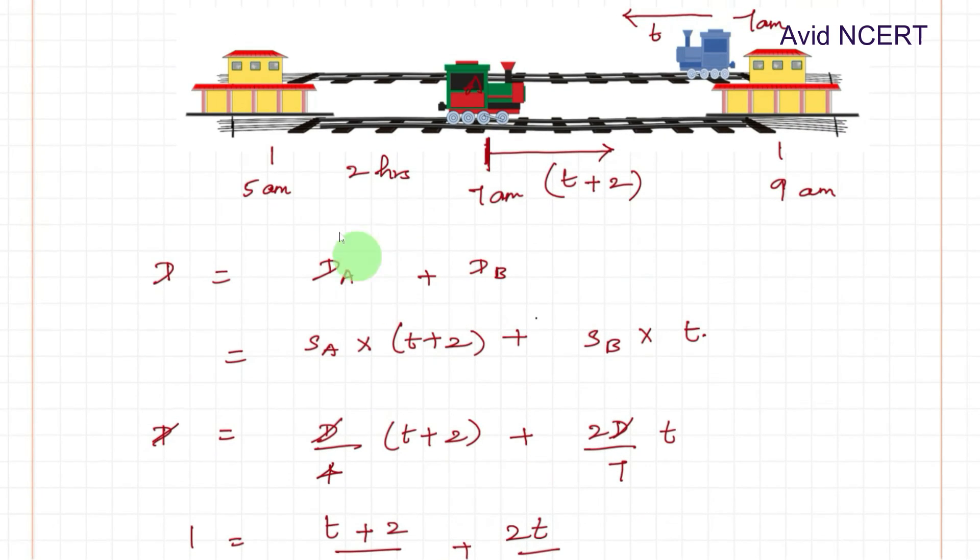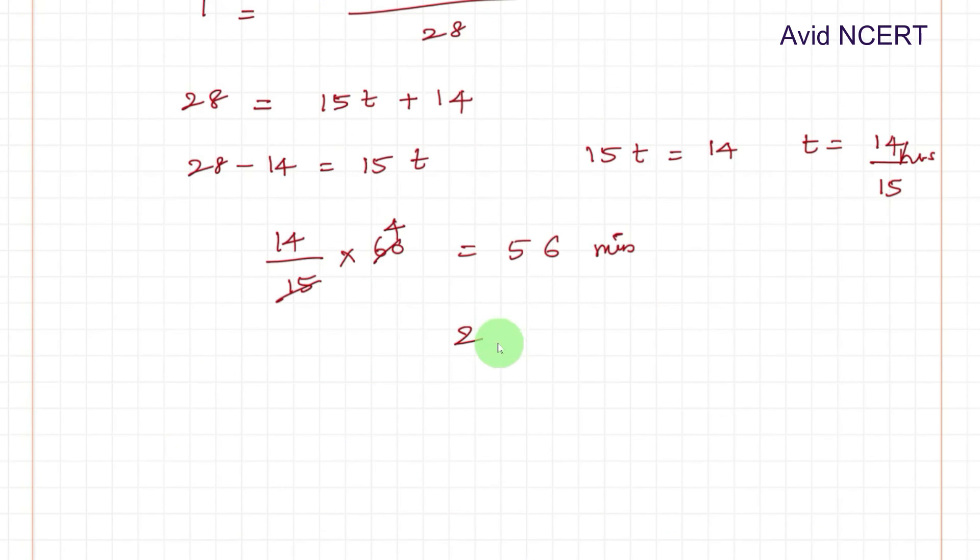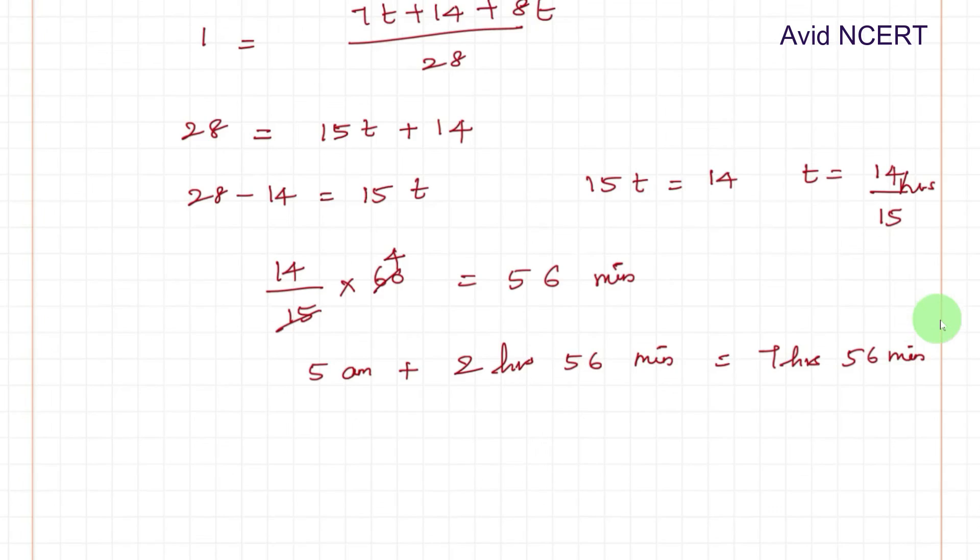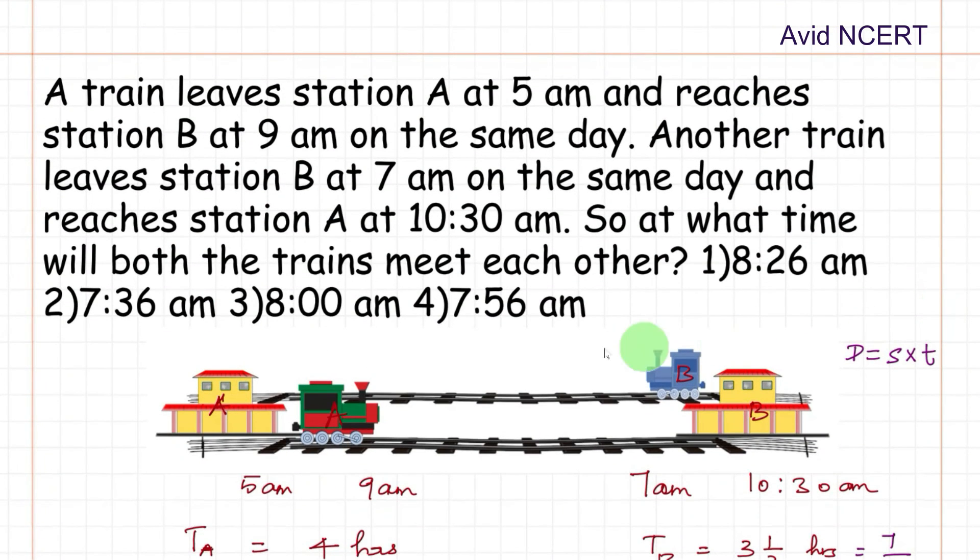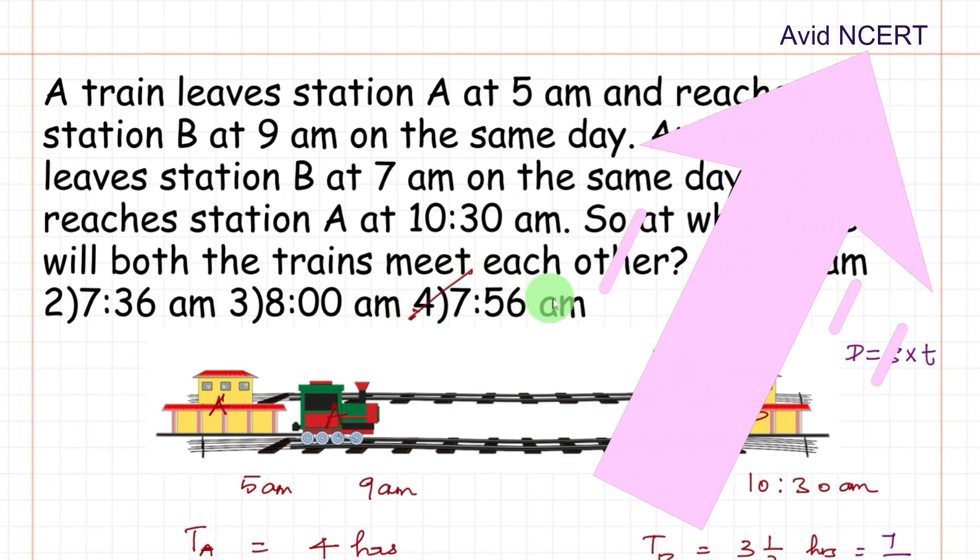So the train already traveled 2 hours, which is 2 hours and 56 minutes. Since it started at 5 a.m., so it is 5 a.m. plus 2 hours and 56 minutes, which equals 7 hours and 56 minutes, which equals 7:56 a.m. So the two trains meet each other at 7:56 a.m.